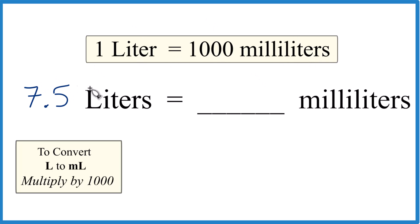So we have 7.5, we should have a lot more than a thousand milliliters in our final answer. So when we're going from liters to milliliters, we just multiply by a thousand.